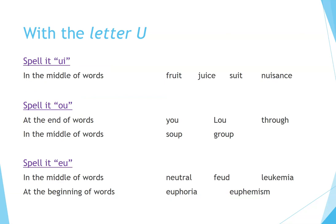Still with the letter U: spell it UI — in the middle of words: fruit, juice, suit, nuisance. Spell it OU — at the end of words: you, Lou, through; in the middle of words: soup, group. Spell it EU — in the middle of words: neutral, feud, leukemia; at the beginning of words: euphoria, euphemism.